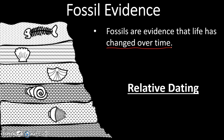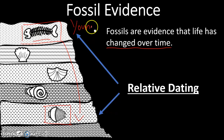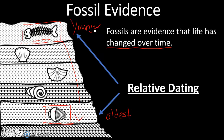And what relative dating shows is if I find one fossil at a lower layer, and I find a separate fossil in a higher layer, like up here, then this top layer relative to the bottom must be younger, and this bottom layer must be the oldest. So this is one way that people will use to determine the age of different fossils.